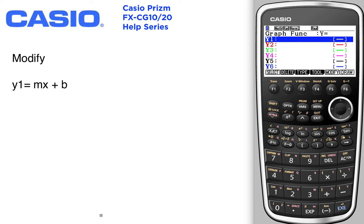Use the alpha keys, alpha m, x theta t, which is your variable, plus alpha b.